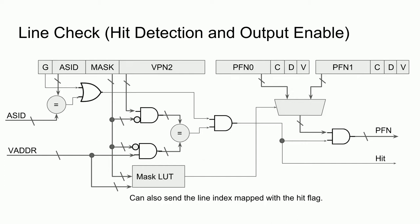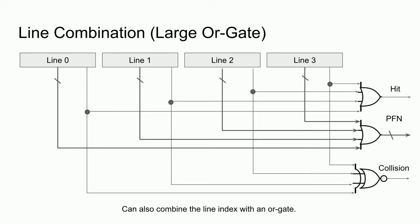As an aside, the final implementation will use a similar design, but the page frame number is not needed — instead, the entry index can be masked. Masking the entry index and combining it in an OR gate is a more efficient way to implement a large input one-hot decoder, in this case with upwards of 48 inputs.